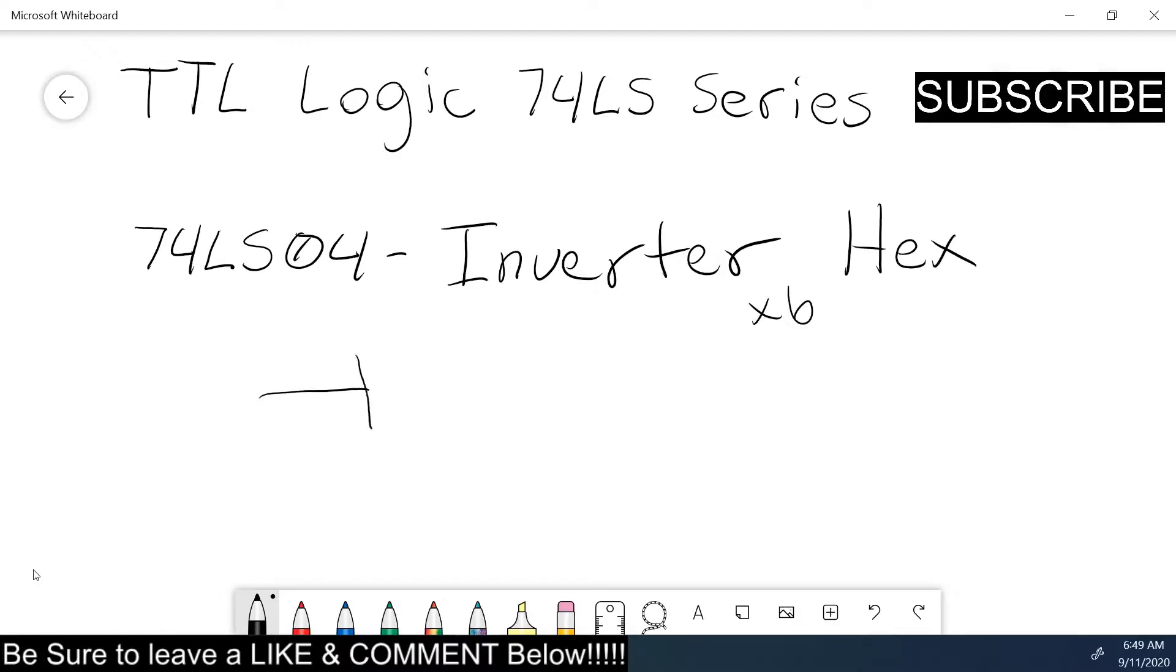An inverter, this is the symbol for an inverter. The truth table is A and out. So if A is a one, out is a zero. And if A is a zero, one is the out. It's a very simple thing. You can't build a whole bunch of different things with it, but you can use it.